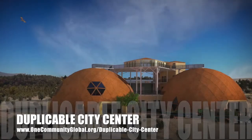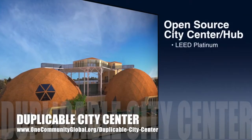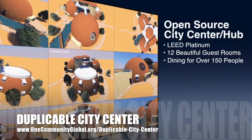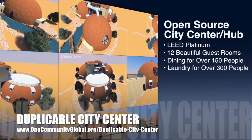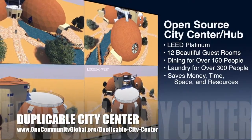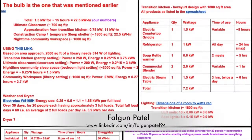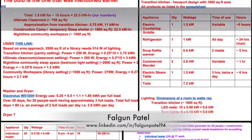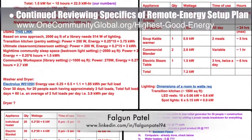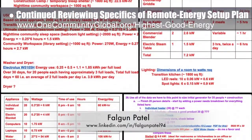One Community is also creating an open source, duplicable city center designed to be LEED Platinum certified, provide 12 guest rooms, dining for over 150 people, and laundry and recreation space for over 300 people, all while saving money, time, space, and resources. Falguen Patil, mechanical engineer, completed his 4th week reviewing, running calculations, and updating the specifics of the remote energy setup plan to update the highest good energy page.